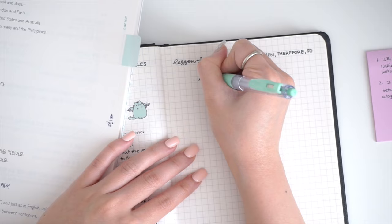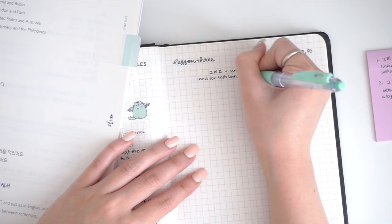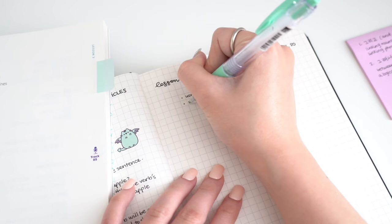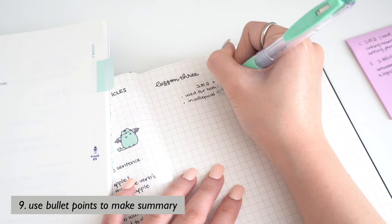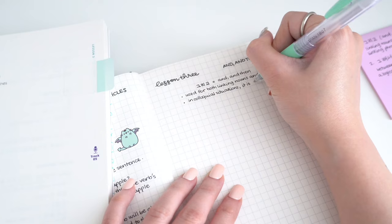I start with writing the main grammar point in the middle, and right below it I explain when, how, and what it's used for in bullet points. The explanations in the book are usually written in paragraphs, which can be hard to read, so by making bullet points in your notes you're essentially making a summary of what you read.